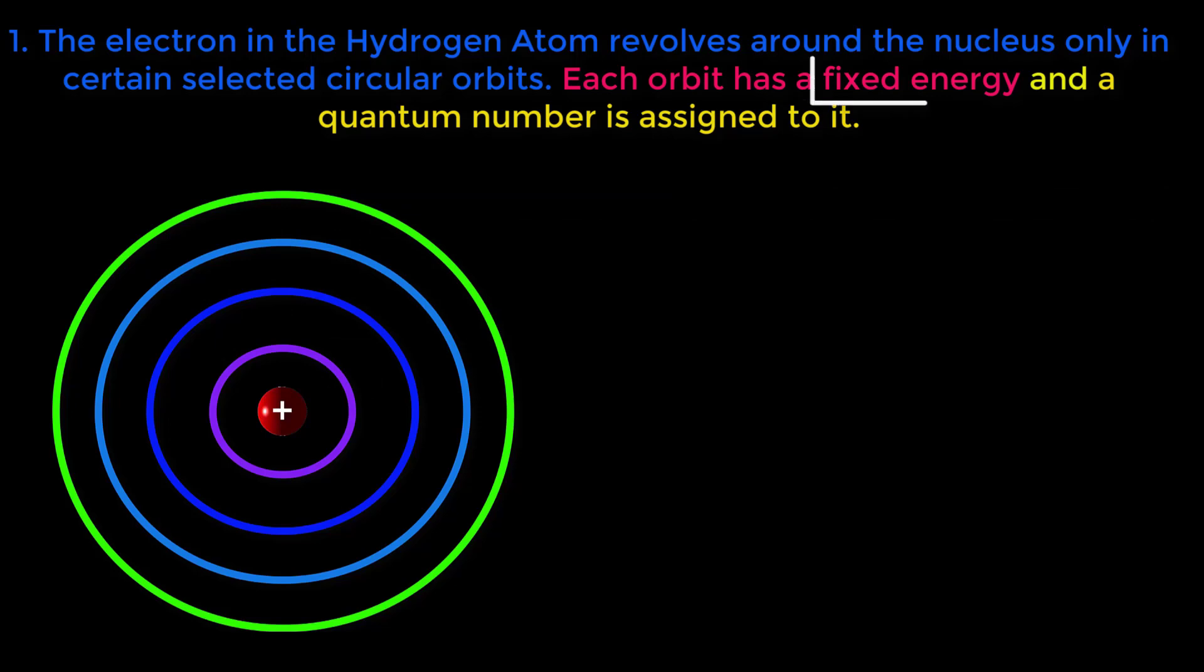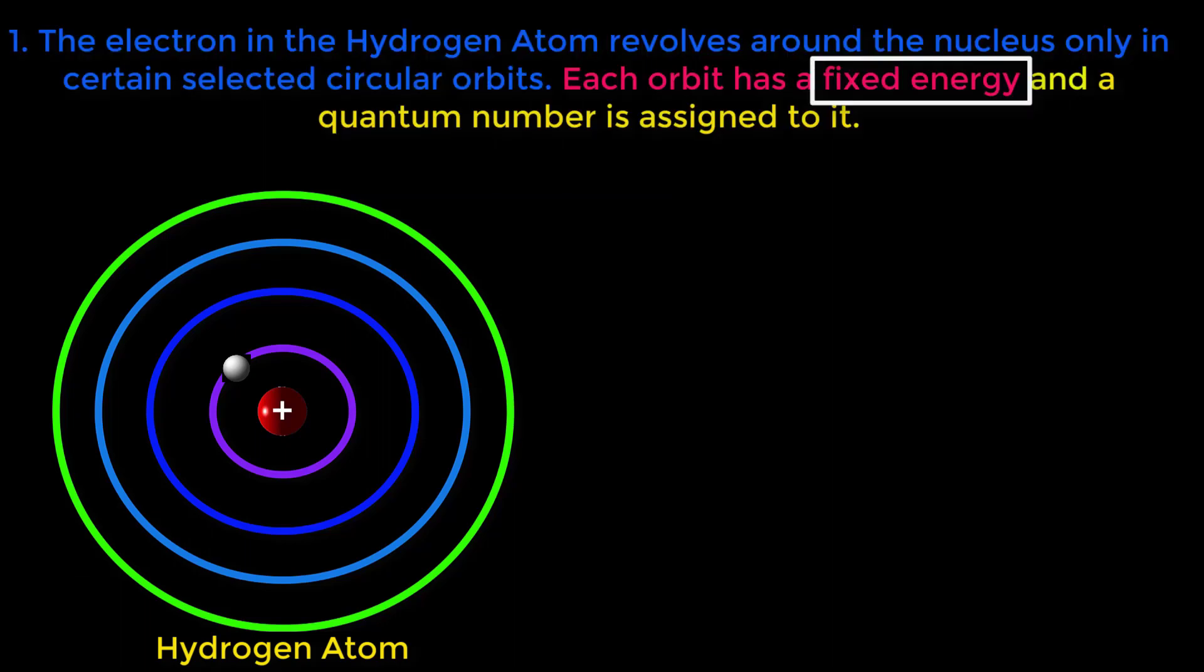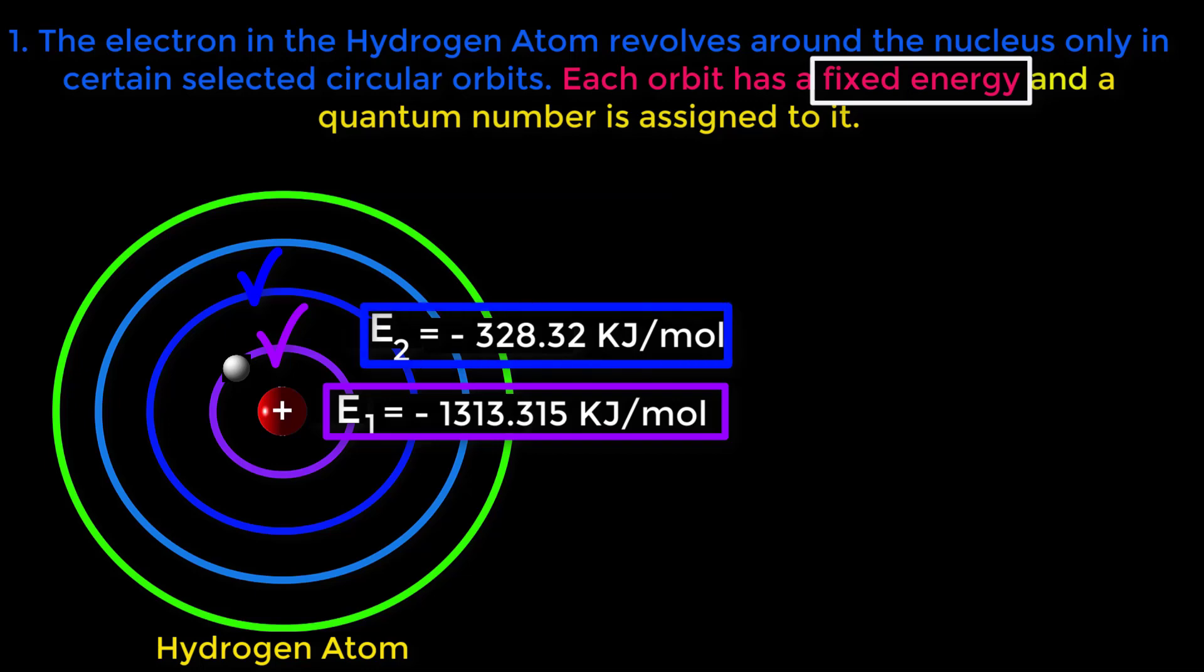Now, look at this word fixed energy. See, for this hydrogen atom, the energy of this first orbit is E₁. E₁ equals minus 1313.315 kJ per mole. This energy is fixed. The energy of this second orbit is called E₂. E₂ equals minus 328.32 kJ per mole. This energy is also fixed.